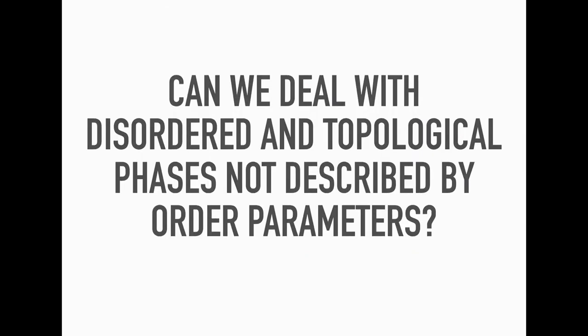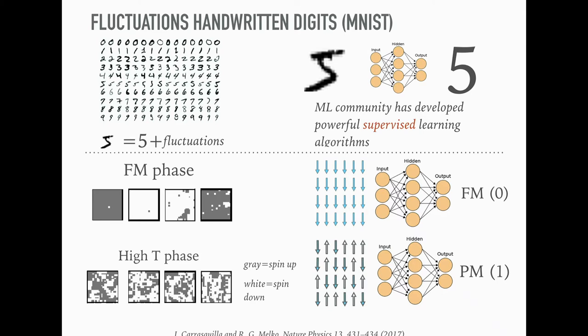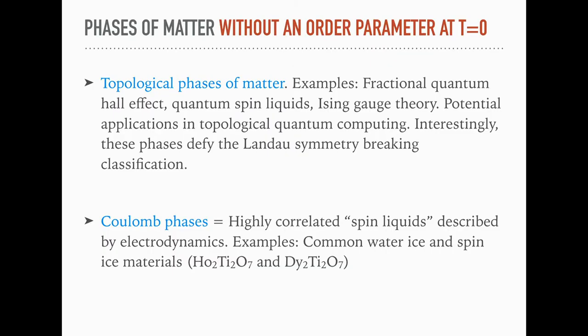We thought, these are pretty easy to recognize. You don't need an algorithm to tell you this is a ferromagnet, or this is a paramagnet. You recognize this by eye. Can we do something more non-trivial? We asked, can we deal with disorder and topological phases, which perhaps do not even have an order parameter? When you have this type of phases, they're harder to recognize, and they're important technologically, like a fractional quantum Hall effect and quantum spin liquids, gauge theories. They all have potential applications. Also Coulomb phases, they're highly correlated spin liquids, typically described by electrodynamics, and even common water is one of them, and then spin ice materials. Today, I'm going to tell you about this Ising gauge theory.